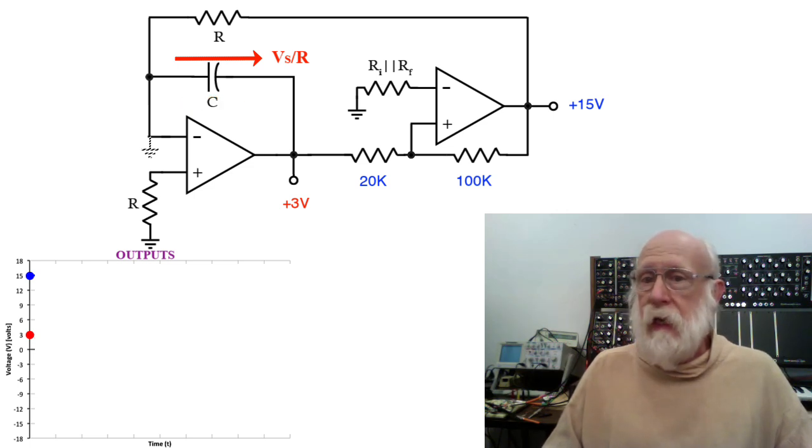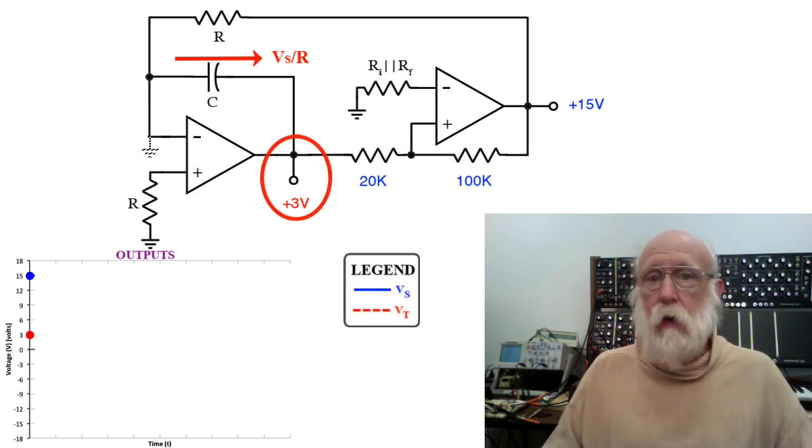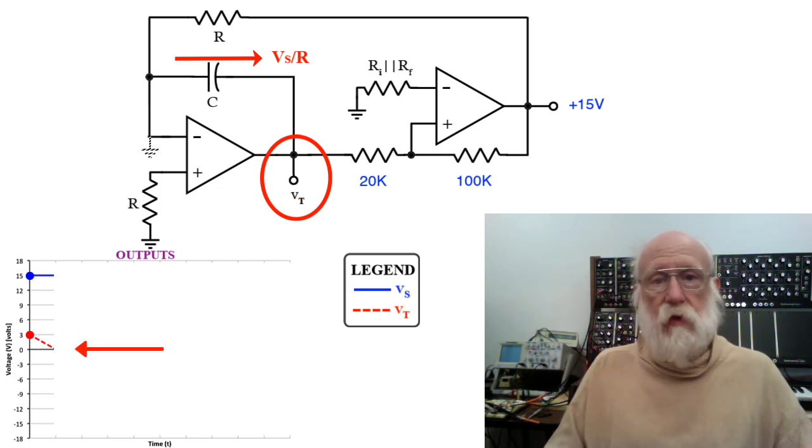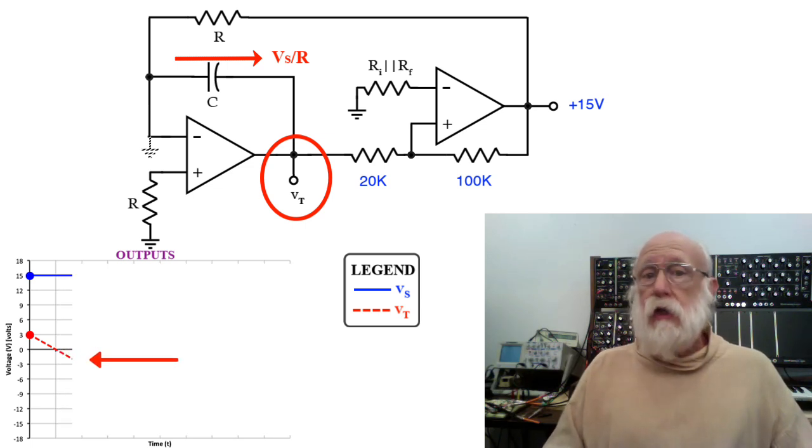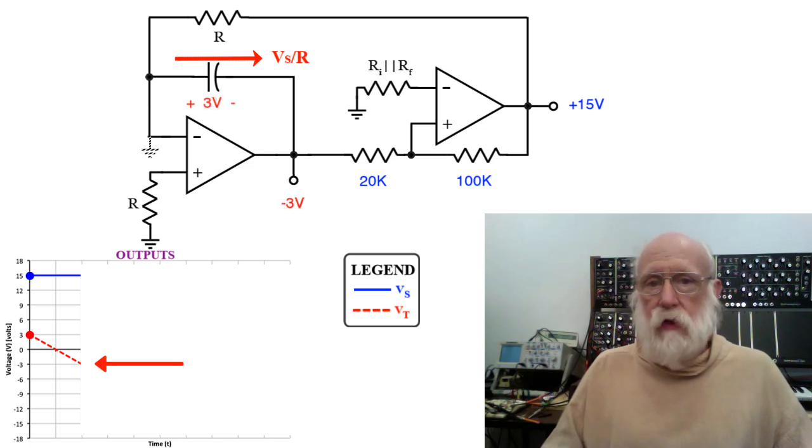Now that also means that the output of that integrator, the input to the Schmidt trigger, is going to start ramping down from plus 3 volts, heading down toward its lower switch point of minus 3. Eventually, it's going to reach minus 3 volts. When it reaches minus 3, bam, the output of the Schmidt trigger goes negative to minus 15.